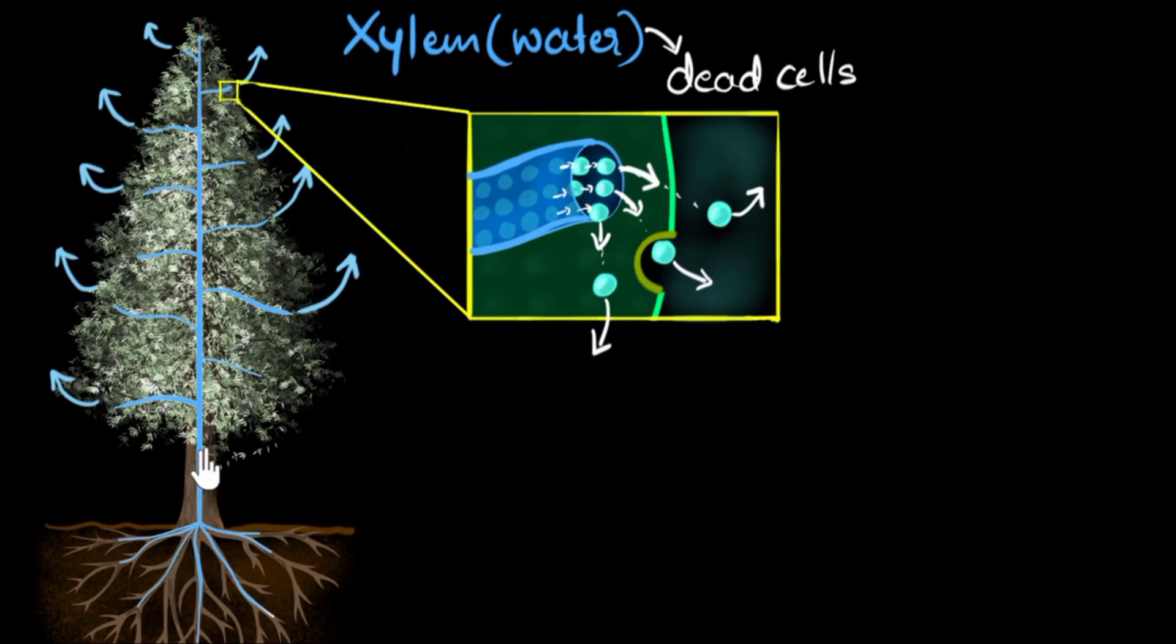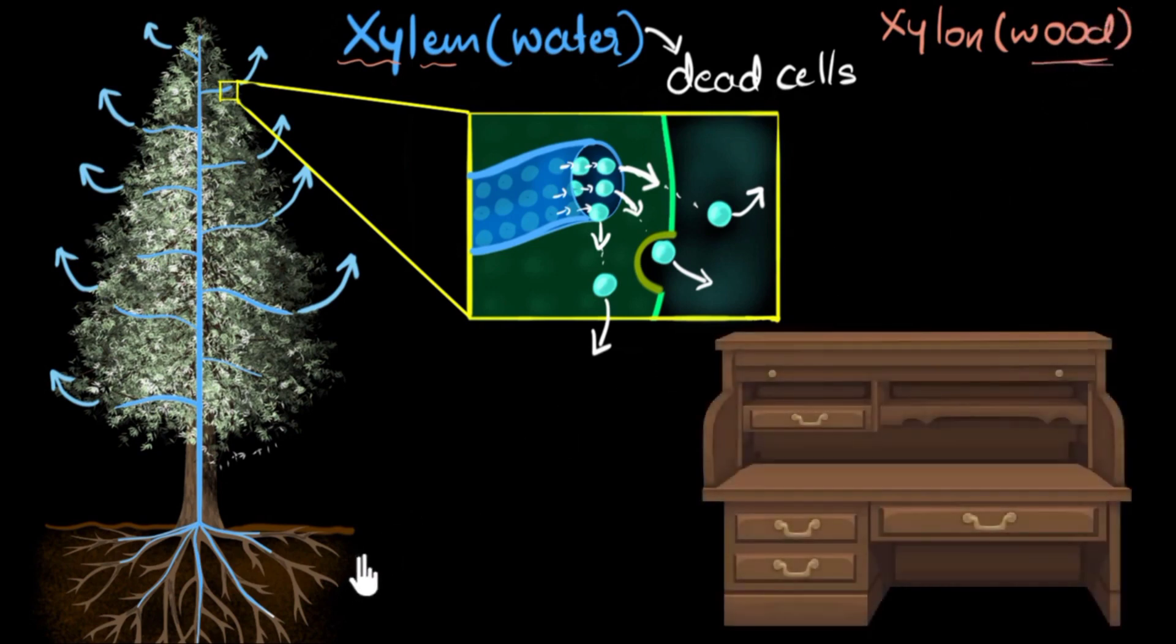And so xylem has pretty strong walls, because of which it also acts like a backbone to the plants and the trees. And if you're wondering, wood is made of xylem. In fact, the word xylem comes from the Greek xylon, which means wood. So the wood that is used in the furnitures and tables and everything were once a part of this amazing water conducting system. Pretty awesome, right?